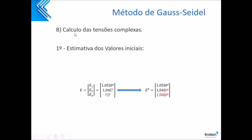O cálculo das tensões complexas: primeiro, você tem que chutar um ângulo inicial. Como eu já defini o meu ângulo — lembra que com o meu V eu tinha os valores de 0,05 e 0,04, e o outro eu não tinha — para o que eu não tenho, eu vou chutar. Eu não vou chutar um valor de 10 com ângulo de 30 graus. Eu vou chutar um valor bem menor para facilitar o meu cálculo. Para o E1, eu tenho 1,05 com 0 graus. Para E2, tenho 1,04 mas não tenho um ângulo. E o E3, a mesma coisa — não tenho nenhum valor, nenhum ângulo. Então eu vou chutar: 1 com ângulo de 0 graus, para facilitar o meu cálculo.